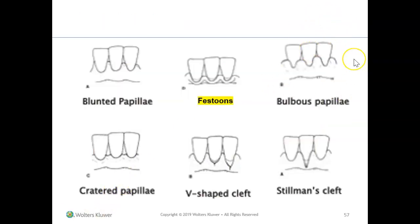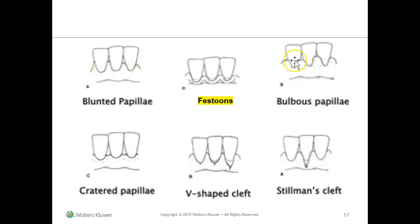Now let's look at papillas specifically. We started with blunted papilla, and when we say papilla we're referring to the area in between the teeth. Another thing that could happen is someone could have a bulbous papilla, which basically means the papilla is so inflamed and bulbous that it is sticking out.